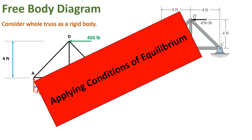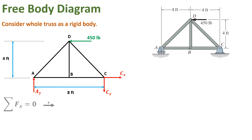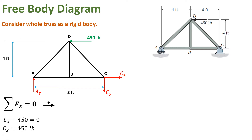Now we are going to apply the conditions of equilibrium. The sum of all forces in the X direction is equal to zero, taking rightward as positive. Two forces are acting in the X direction: CX and 450. CX is acting in the right direction so it is positive, and 450 is acting in the left direction so it is negative. From this condition, CX comes out to be 450 pounds.